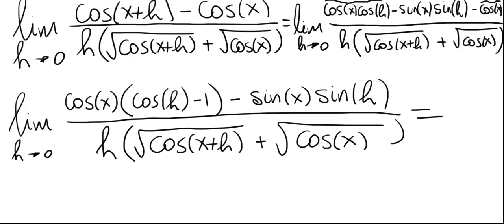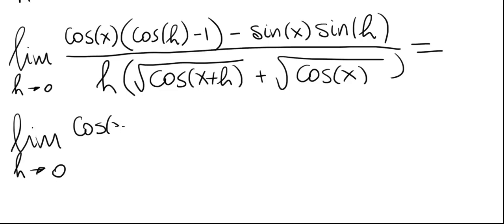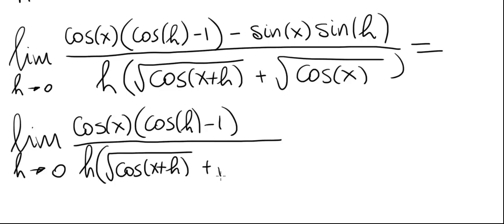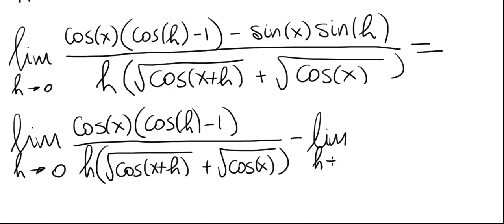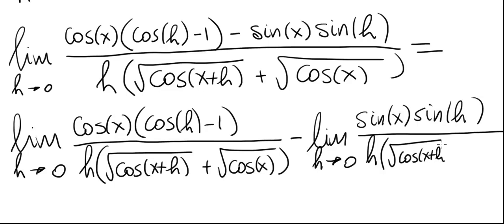Now let's write this as a difference of two limits. The first limit is: limit as h approaches zero of cosine of x times (cosine of h minus 1) over h times the square root of cosine of (x+h) plus the square root of cosine of x. Minus the second limit: limit as h approaches zero of sine of x times sine of h, divided by h times the square root of cosine of (x+h) plus the square root of cosine of x.